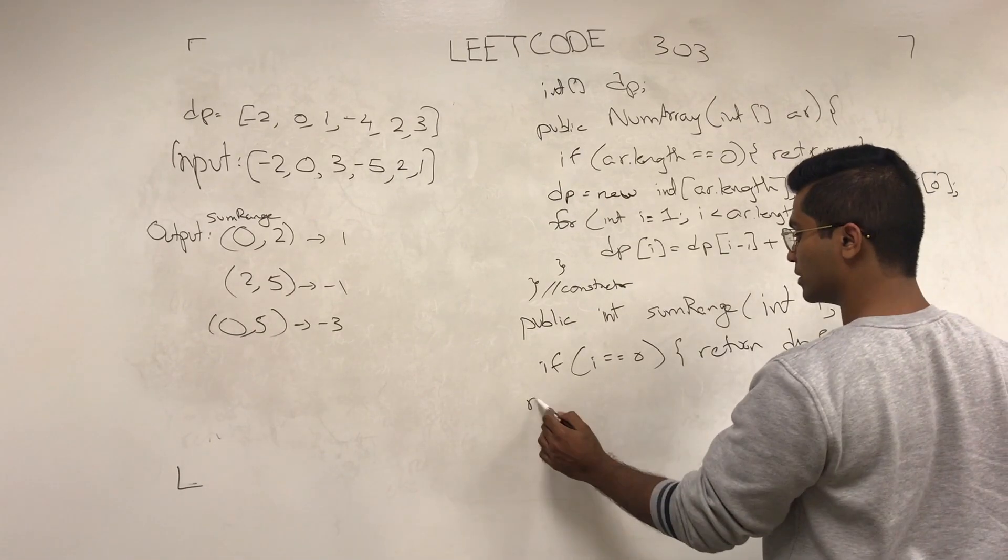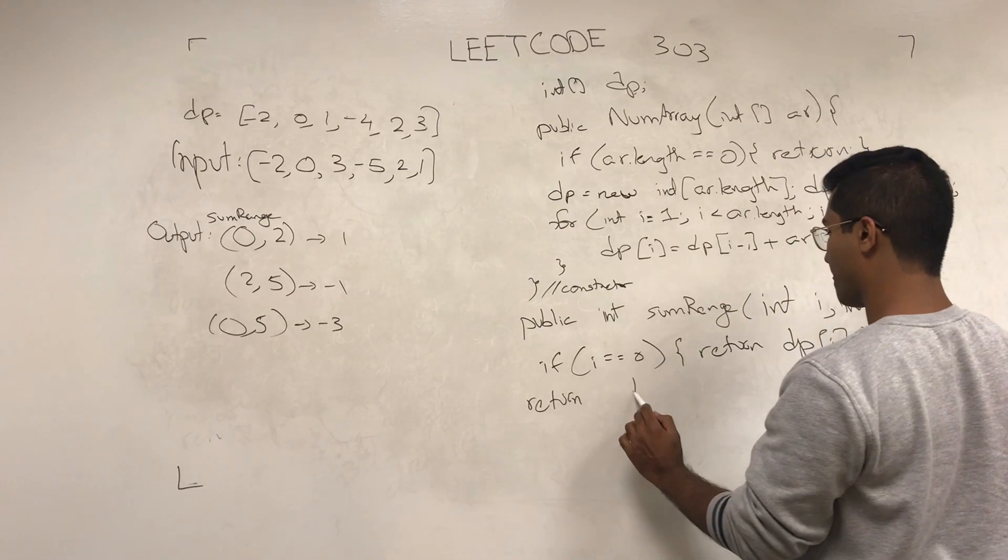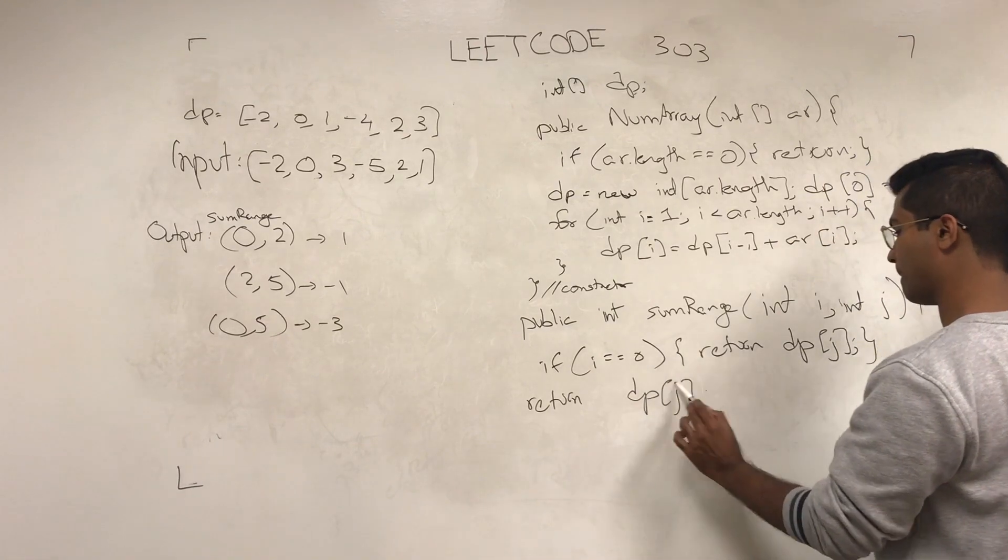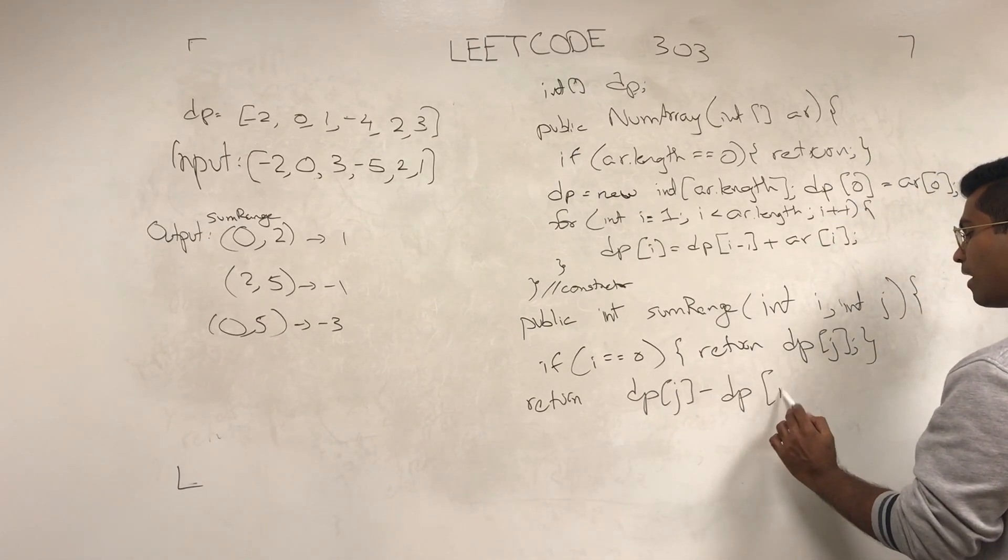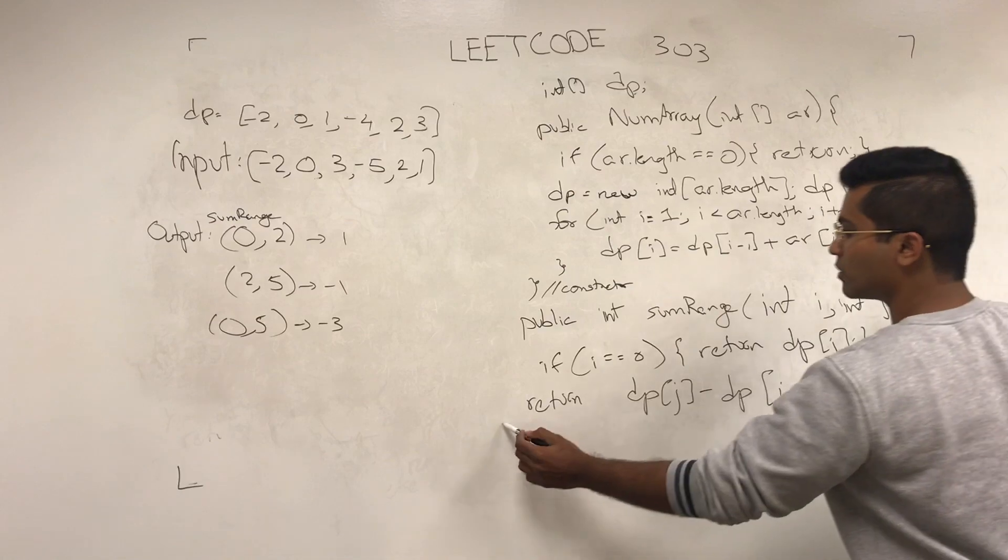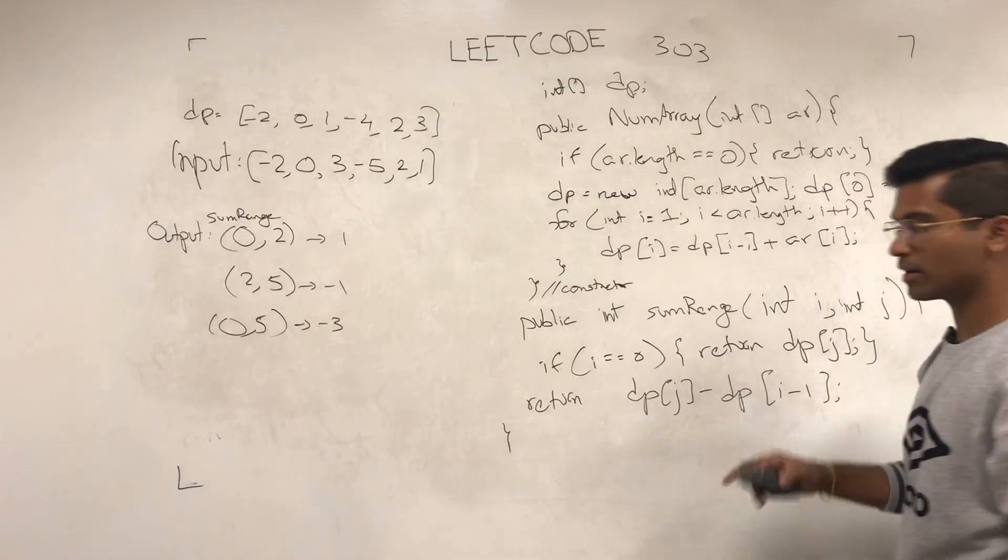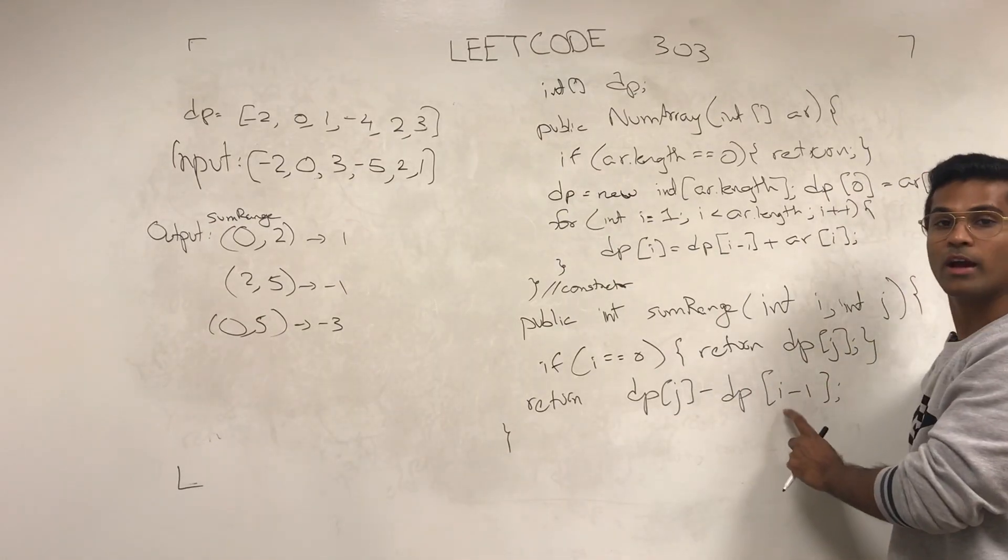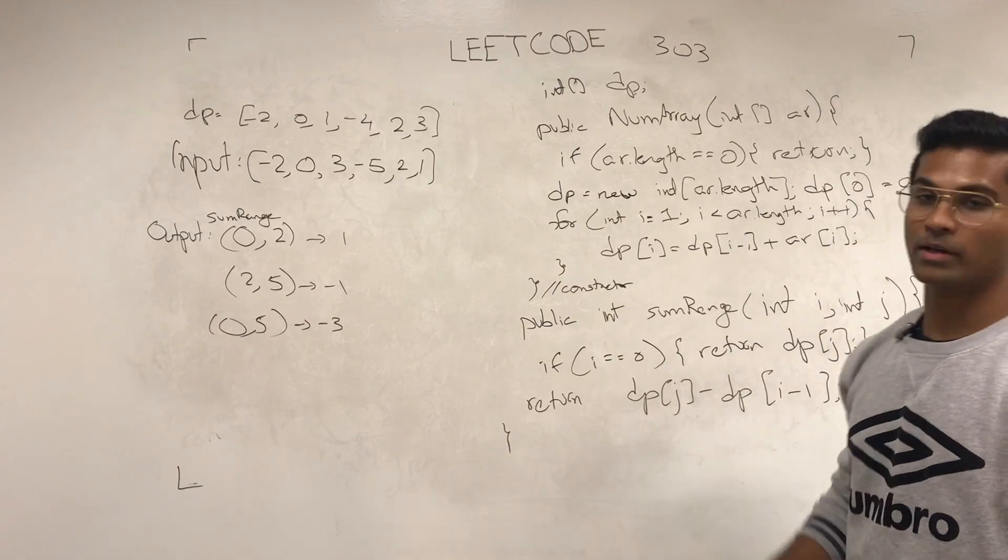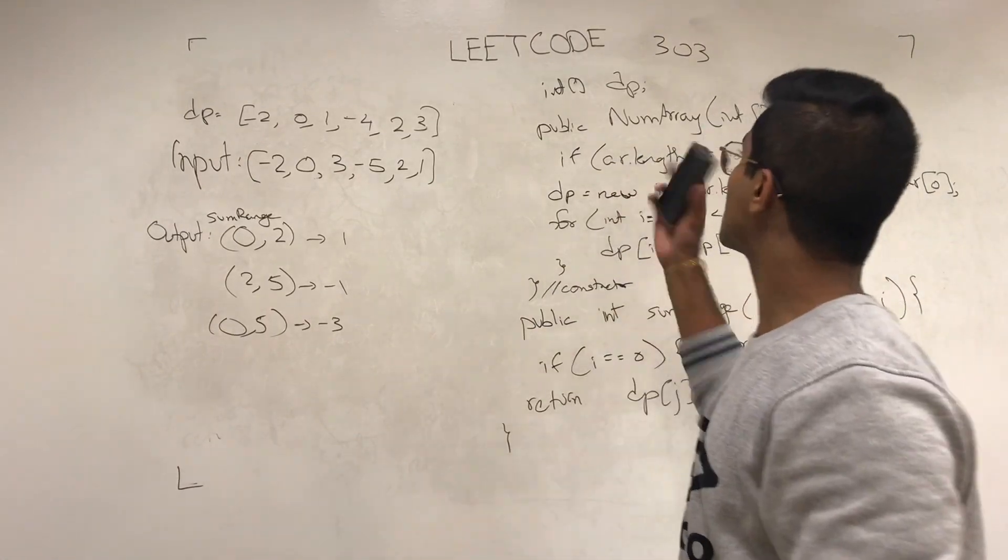Otherwise, we just return DP[j] minus DP[i-1]. The reason we do this upper if check is we want to make sure that we're not going out of bounds when we do i-1. And that's how we solve LeetCode 303.